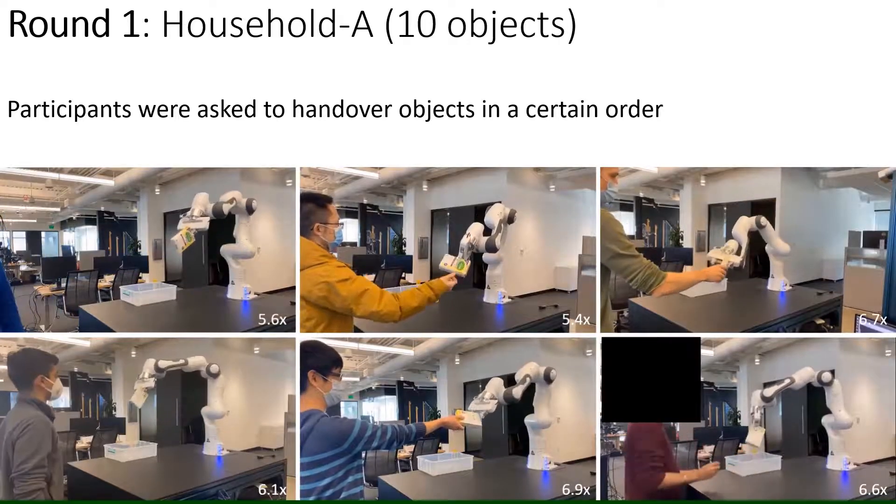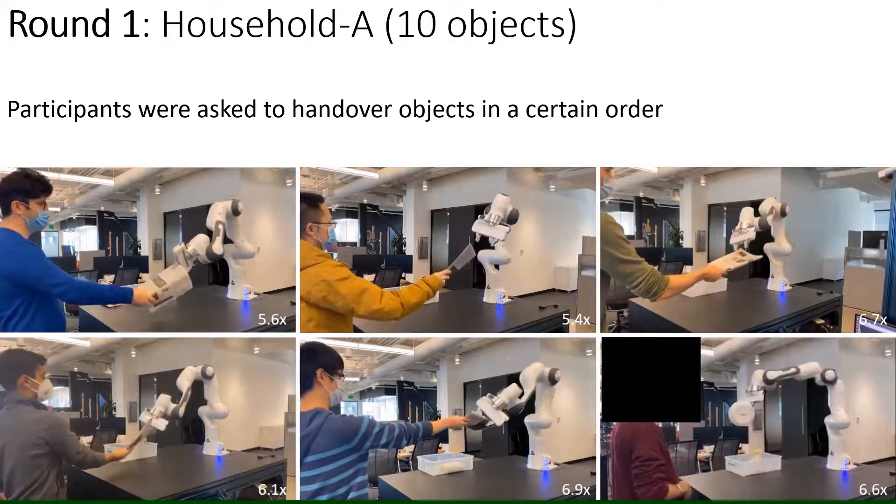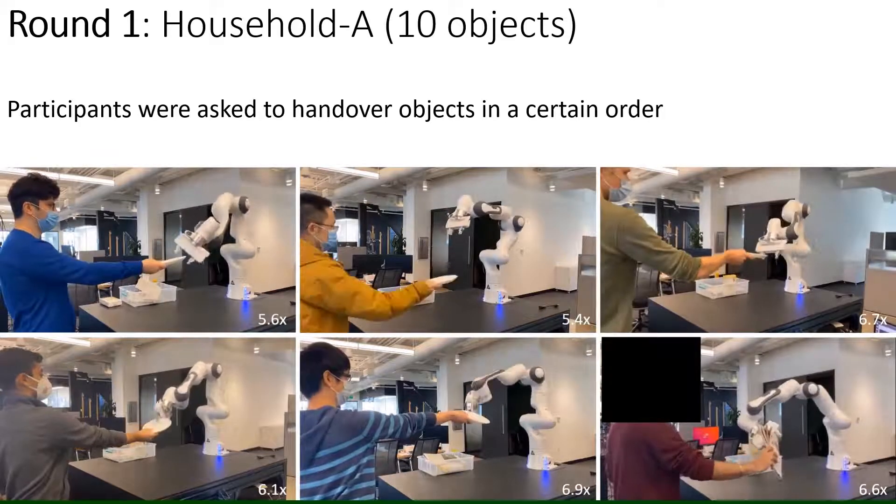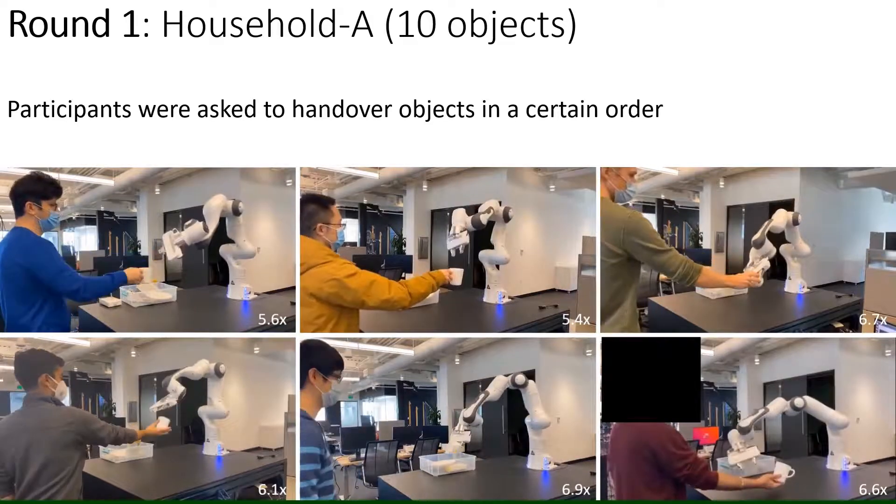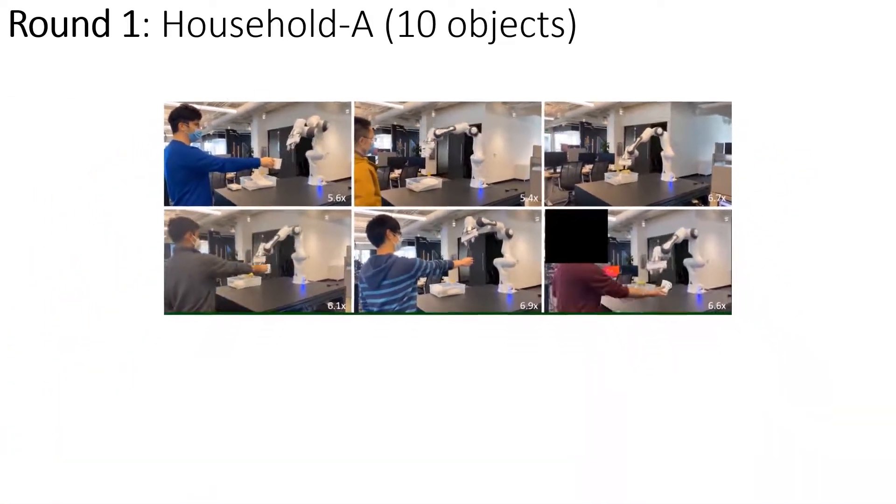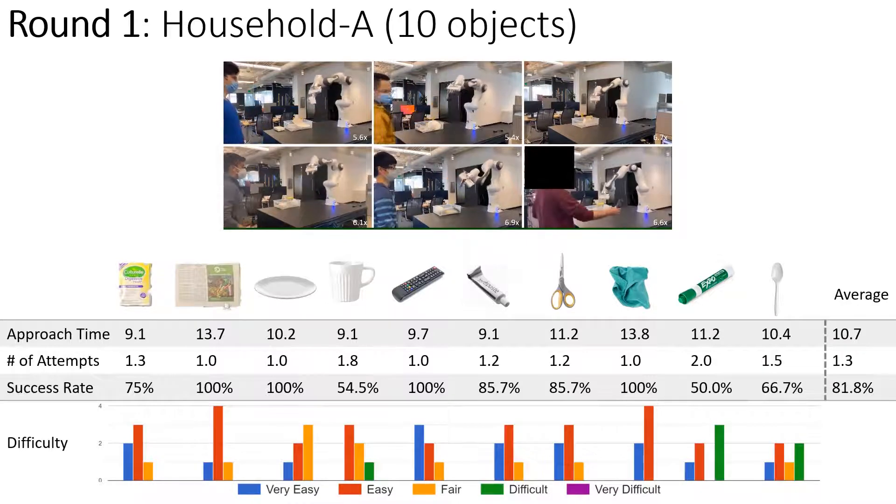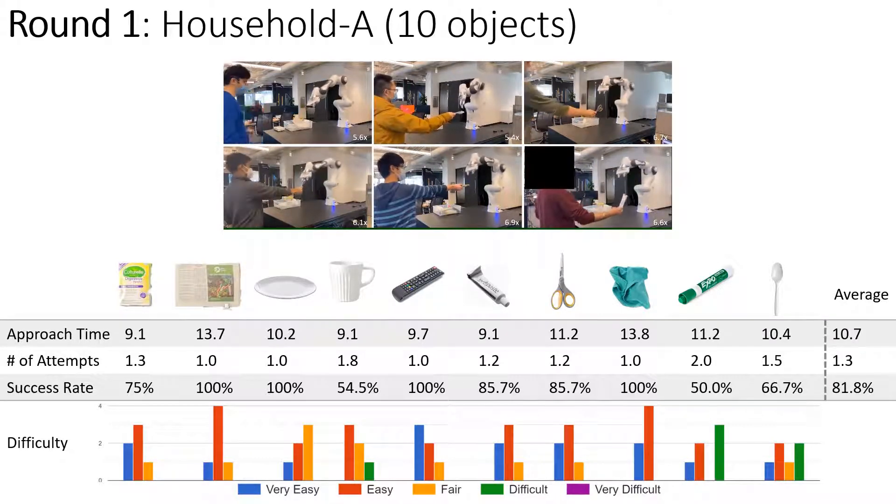For the first round, we asked participants to hand over 10 objects from the first set in a predefined order. The robot successfully grasped the objects from all participants while avoiding contact with the user's hand in all cases. We recorded the approach time, number of attempts, and success rate. Our system allowed the robot to take all objects in less than two trials on average.